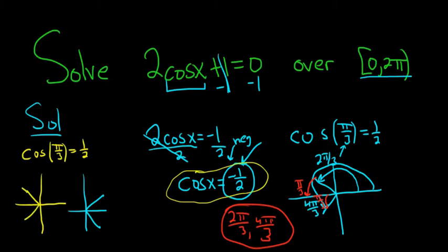The familiar angles that are multiples of pi over 3 that reside in these quadrants are 2 pi over 3 and 4 pi over 3. And so those are the answers. I hope that made sense.